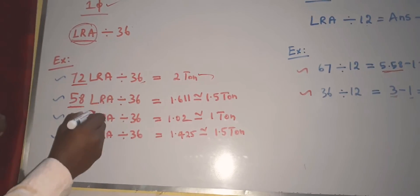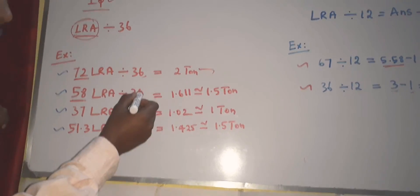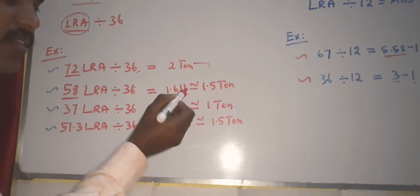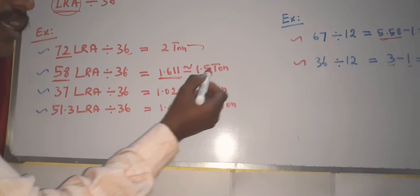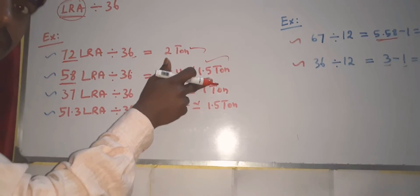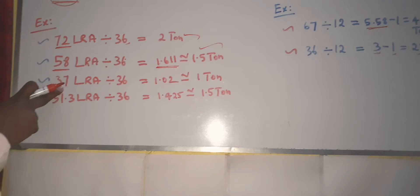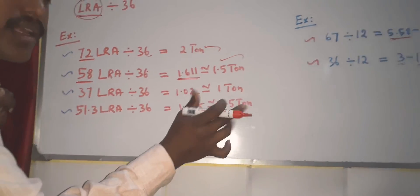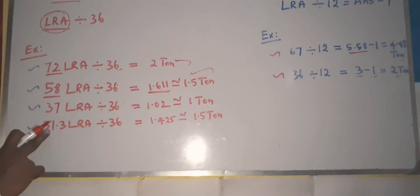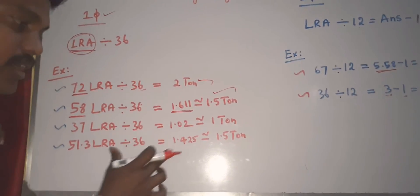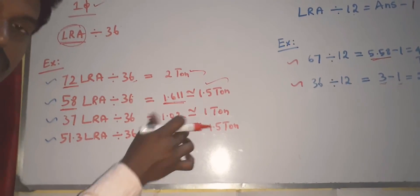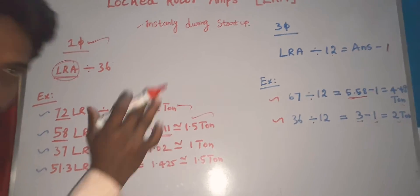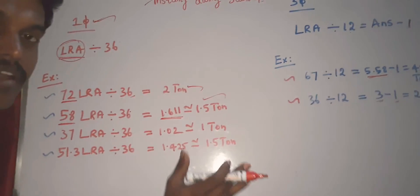For single-phase: 58 LRA divided by 36 gives approximately 1.610, so that is about 1.510. Then 37 divided by 36 is 1.02, and approximately 1.10. Then 51.3 divided by 36 divided by 1.425 is near 1.510. So for single-phase you can get LRA; you will have 10H.